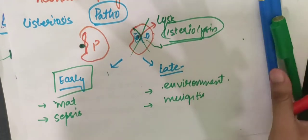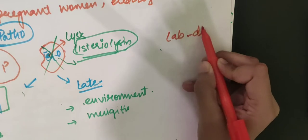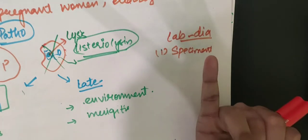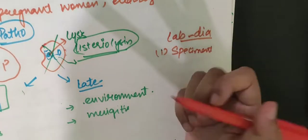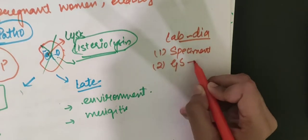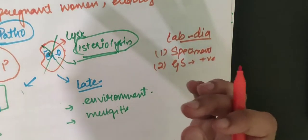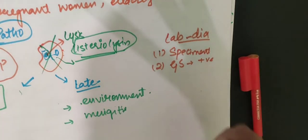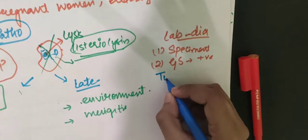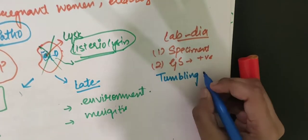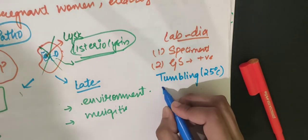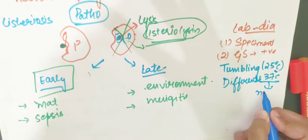For lab diagnosis, we first collect the specimen — which can be CSF, blood, or amniotic fluid. We then do gram staining, which shows coccobacilli. The organism shows tumbling motility at 25°C, but at 37°C it is non-motile. This is called differential or temperature-dependent motility, because the flagella are temperature-dependent.